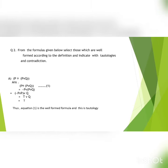The second question is: from the formulas given below, select those which are well-formed according to the definition and indicate with tautologies and contradiction. Given that P implies P or Q.